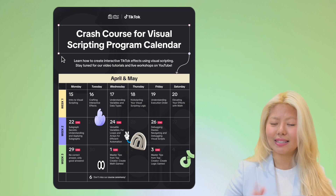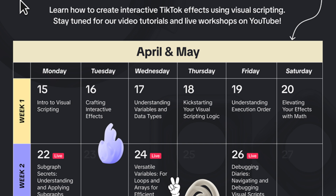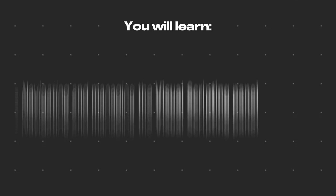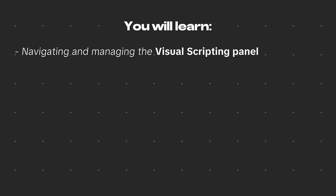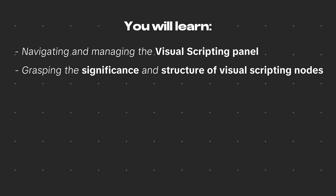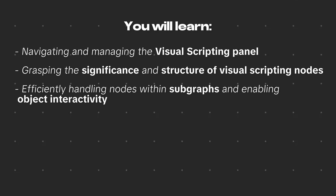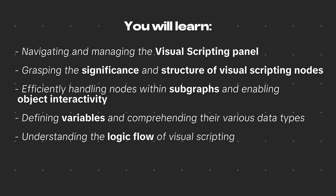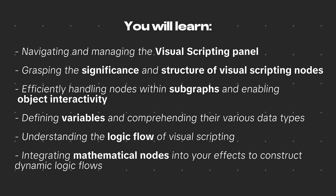This course is comprised of three weeks. In the first week, you will watch six videos that will teach you the theory behind visual scripting. In these videos, you will learn how to navigate and manage the visual scripting panel, grasp the significance and structure of visual scripting nodes, efficiently handle nodes within subgraphs and enable object interactivity, define variables and comprehend their various data types, understand the logic flow of visual scripting, and integrate mathematical nodes into effects to construct a dynamic logic flow.